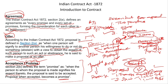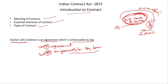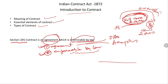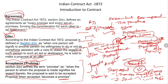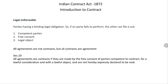Agreement includes both offer and acceptance. Now let us discuss enforceable by law. Enforceable by law means if any problem happens in the agreement, either of the parties can go to a court. To go to court, the agreement should be between two competent parties. Competent parties means the party should not be a minor, the person should be of sound mind — not a lunatic, idiot, or person of unsound mind — and age should be more than 18 or 21 years as the case may be.